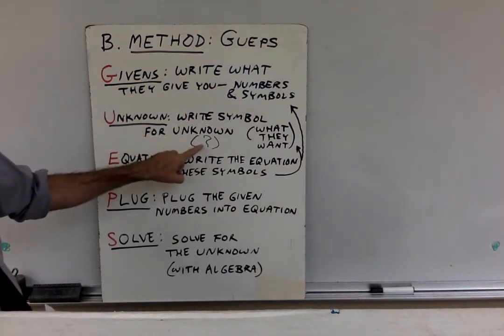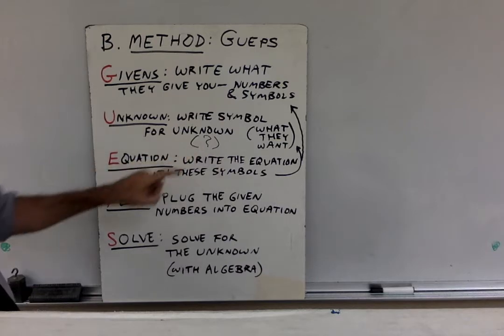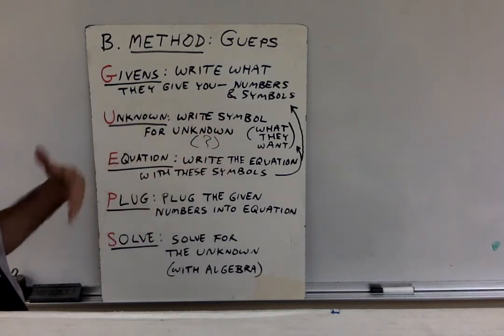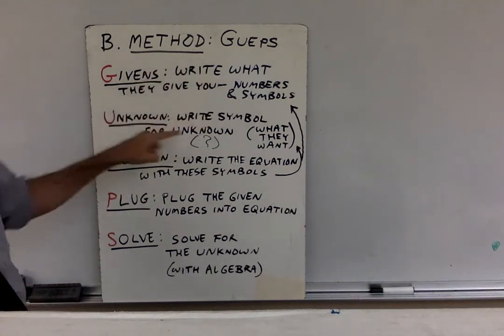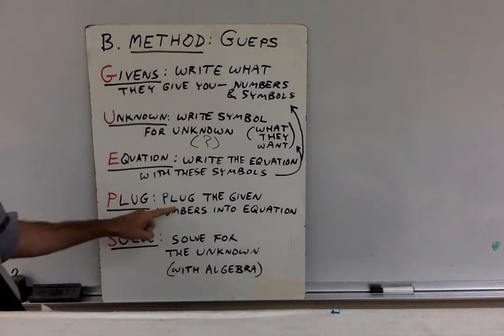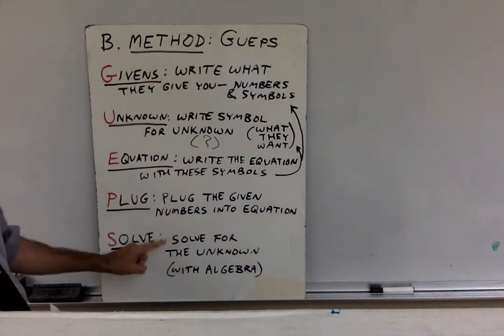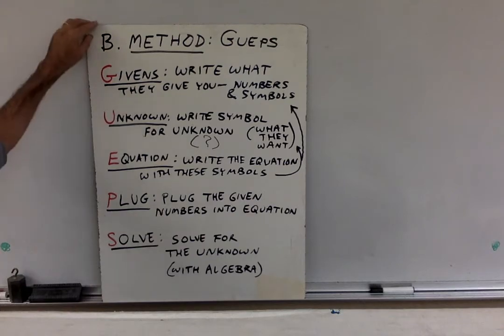You'll see what that means in the example. Unknown means the thing they're looking for, what they're asking a question about. Equation means you hunt through your equations, and at some point of course there's going to be like seven or eight all at one time that you have to know. Hunt through them until you find the one that connects all these symbols that you've written down up here. Plug the numbers into the equation and then use algebra to solve it for the thing they want, the unknown.